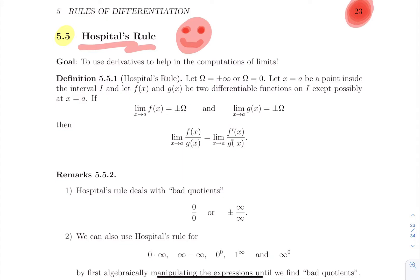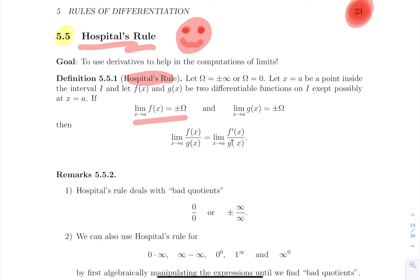L'Hôpital's Rule is a rule that allows you to compute limits called bad quotients. If you have a limit of the form 0/0 or ∞/∞ (up to a sign), you will be able to apply L'Hôpital's Rule. Suppose ω is plus or minus infinity or zero, suppose you have a point inside an interval and two functions whose derivatives exist on that interval — maybe not at a itself, but that doesn't matter because of the hole principle. If the limit of f as x approaches a is ±ω, and the same for g, then...